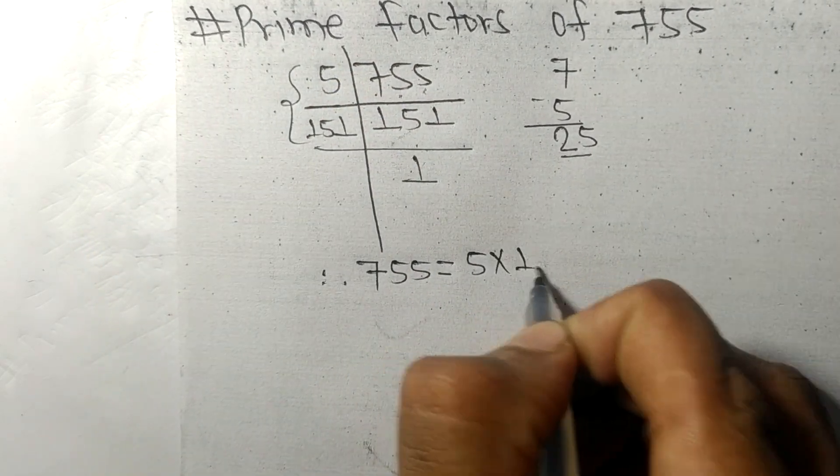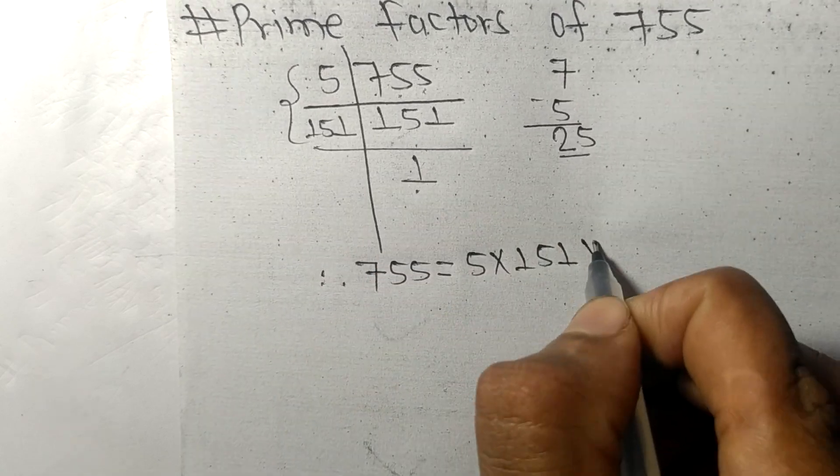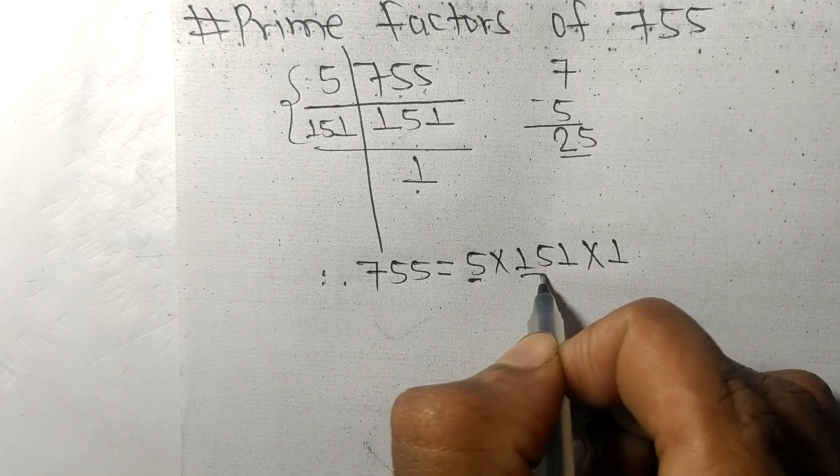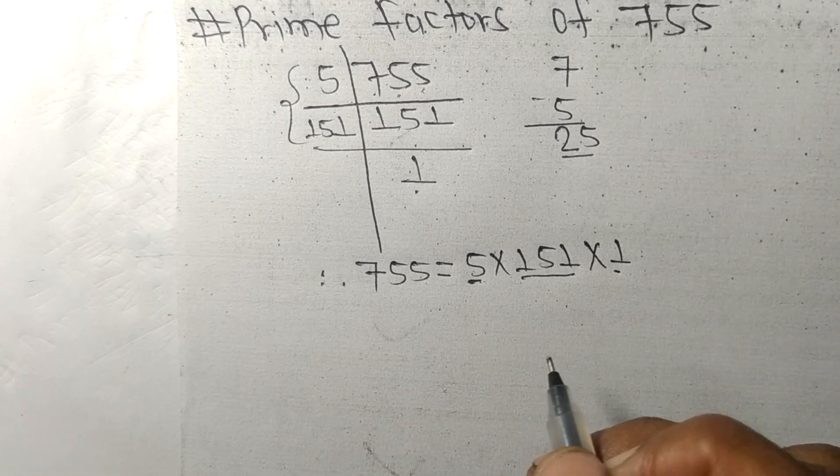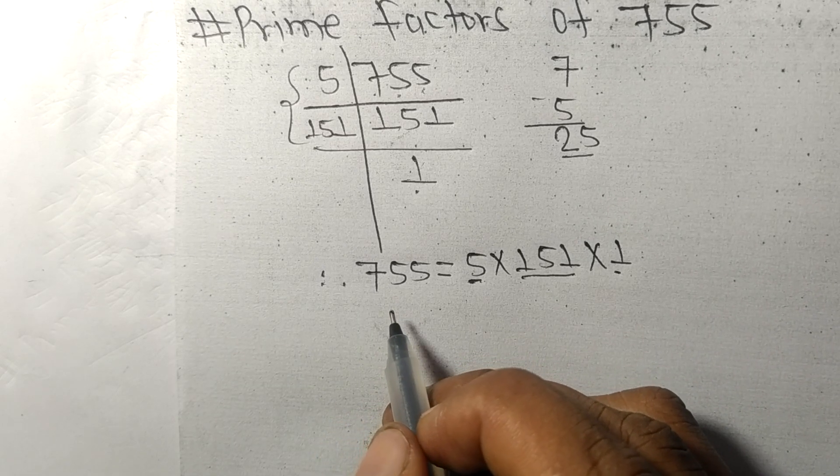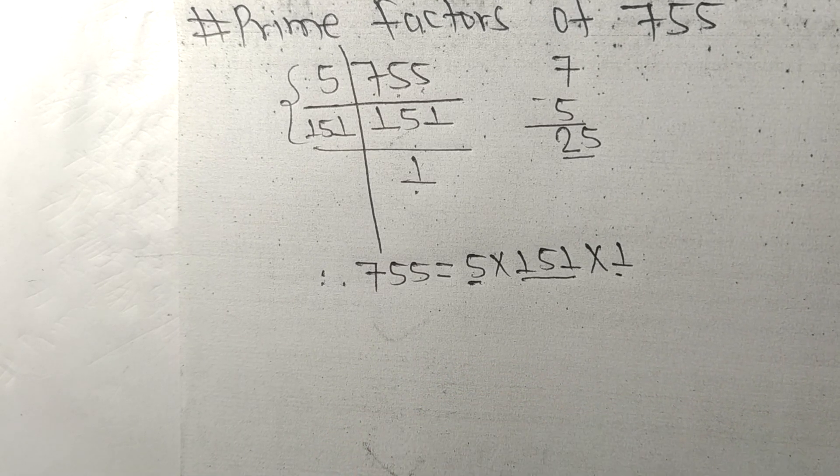So 5, 151, and 1 are the prime factors of 755. This much for today and thanks for watching.